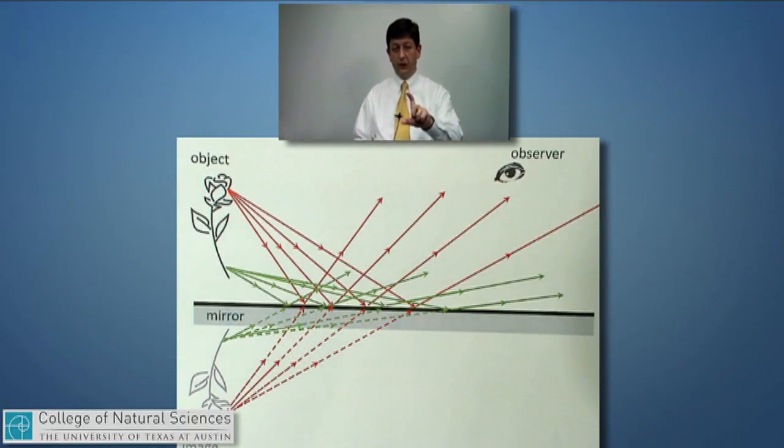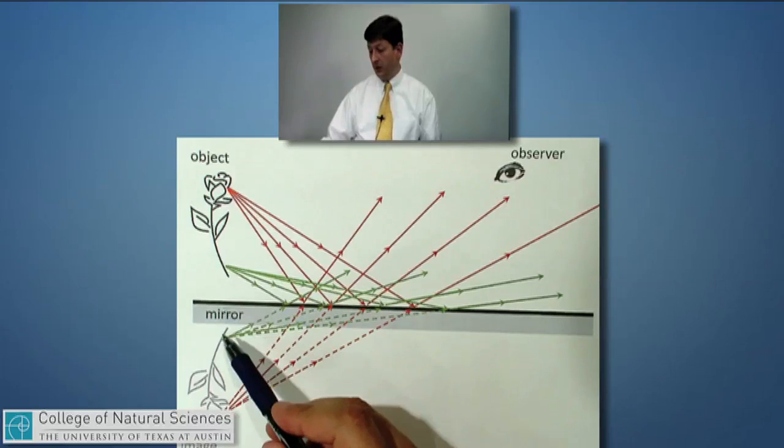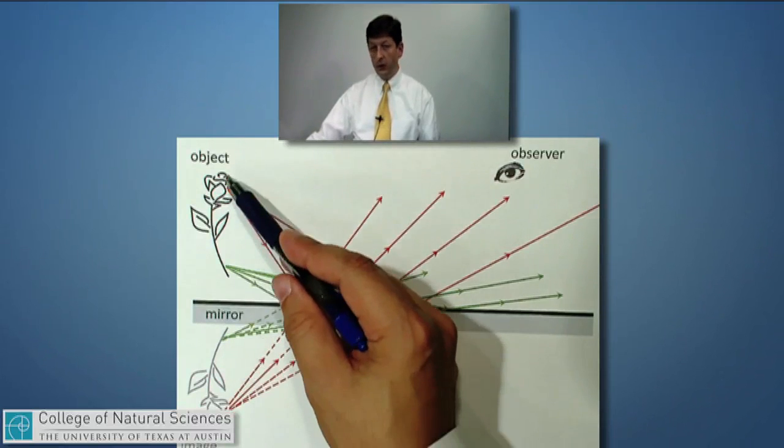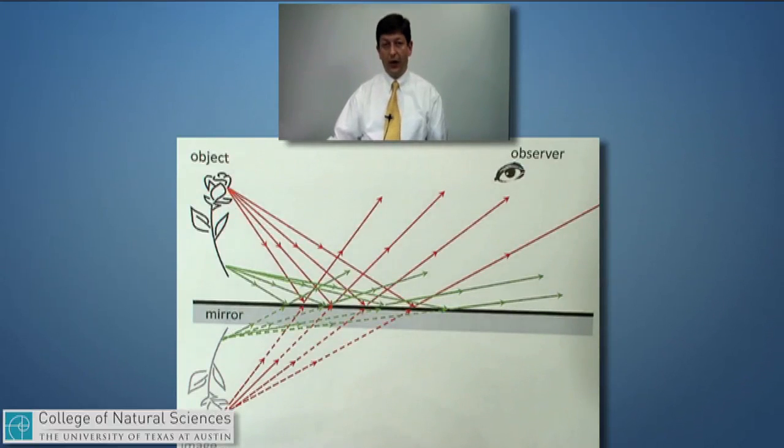Because we stood, in this example, the object on top of a mirrored floor. So the things that are closer to the mirror look like they are closer to the back of the mirror. And the things that are further away from the mirror look like they're further back in behind the mirror.